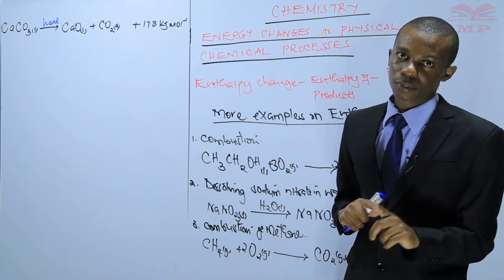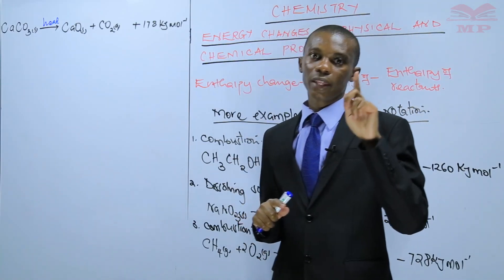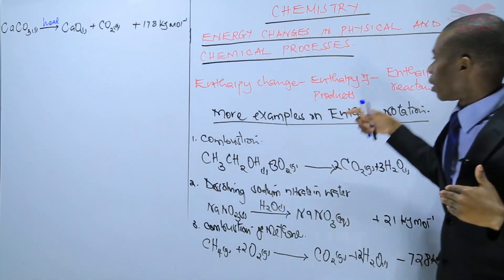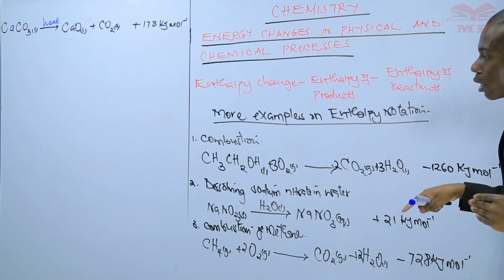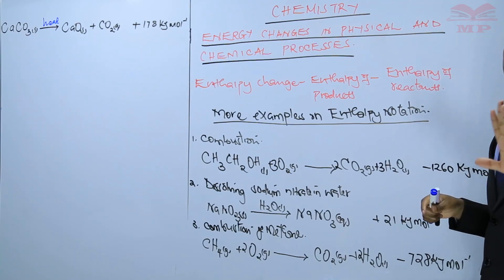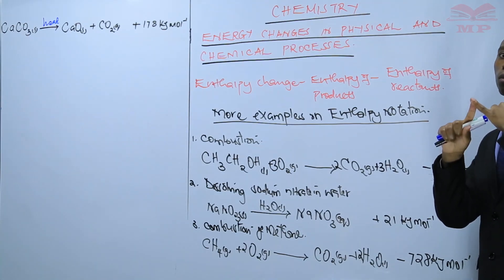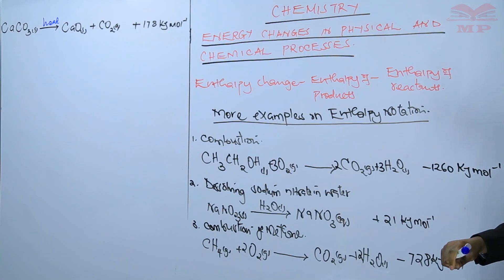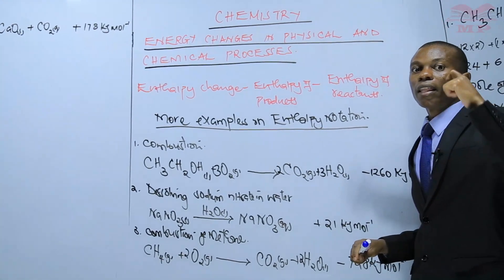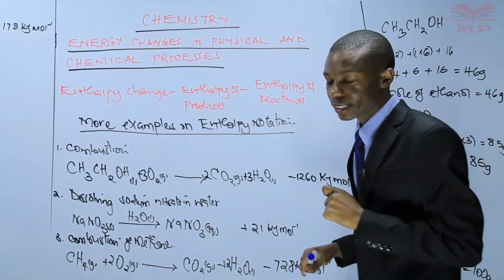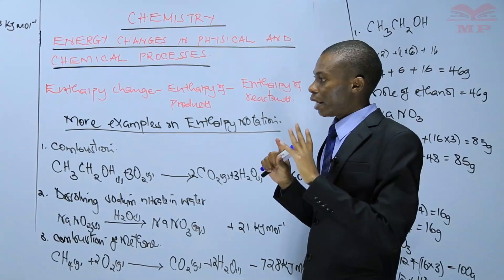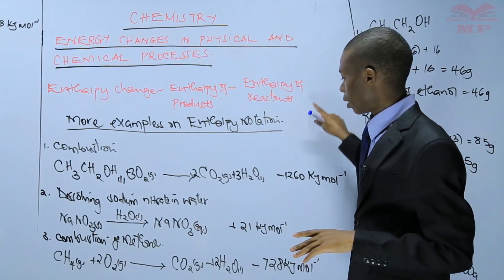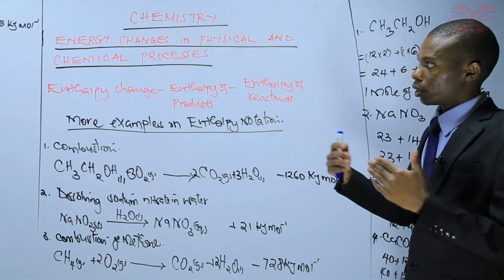A positive enthalpy change means an endothermic reaction; a negative sign means an exothermic reaction. These signs come from subtracting the enthalpy of reactants from the enthalpy of products. In endothermic reactions, the enthalpy of products is greater than reactants, giving a positive value. In exothermic reactions, the enthalpy of reactants is greater than products, giving a negative value.